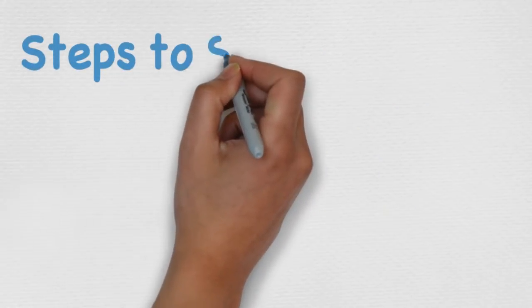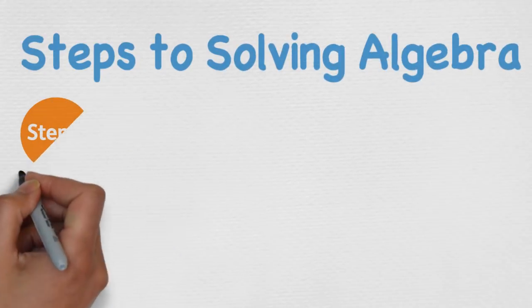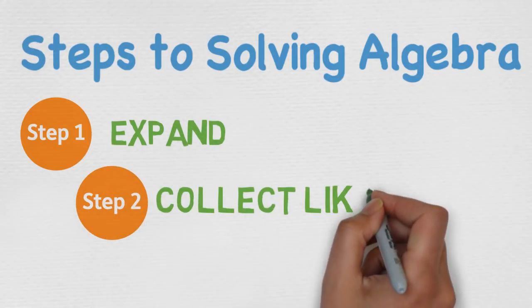So there's three steps to solving algebra. Step one, expand. Step two, collect like terms. And step three, inverse operations.